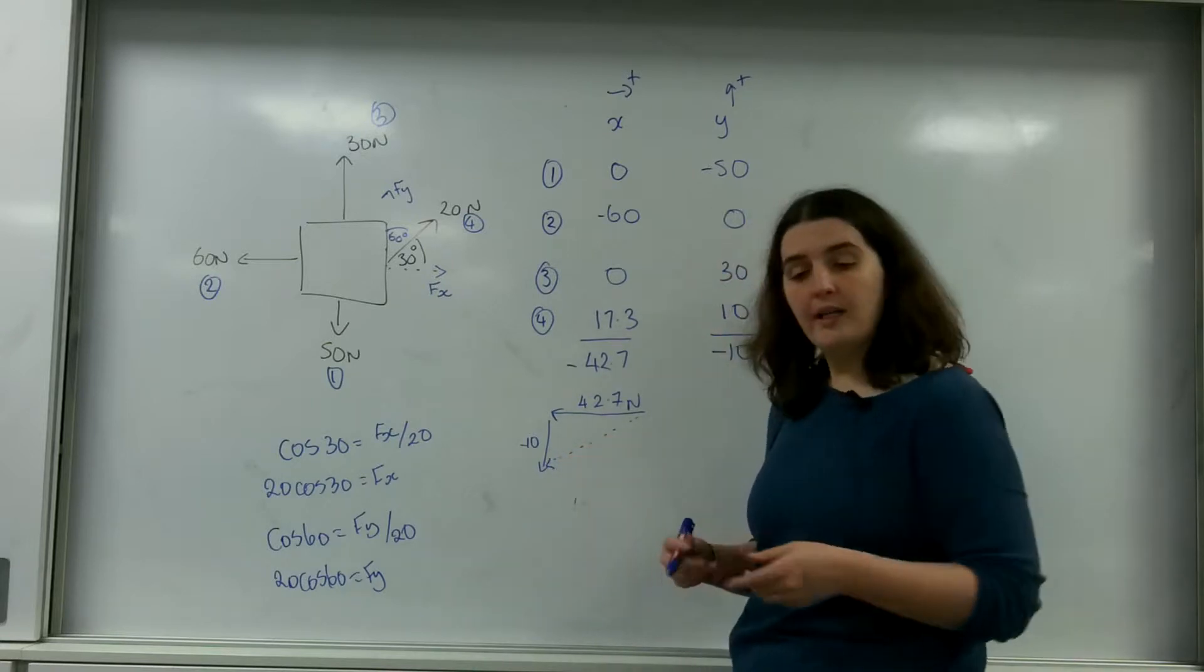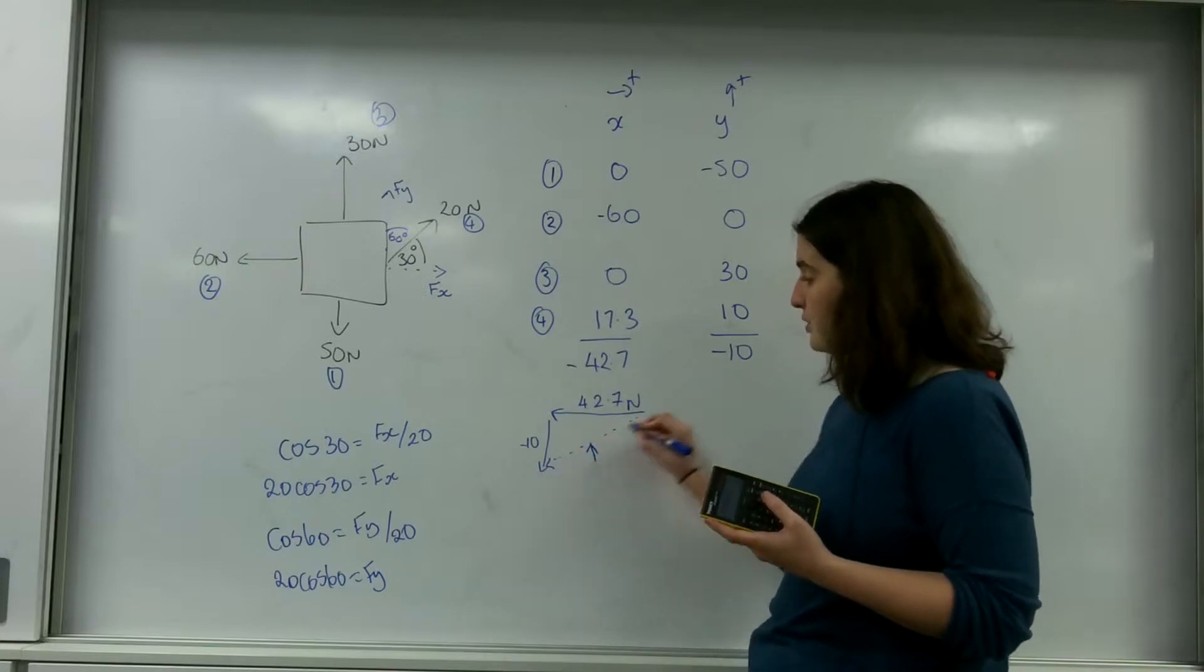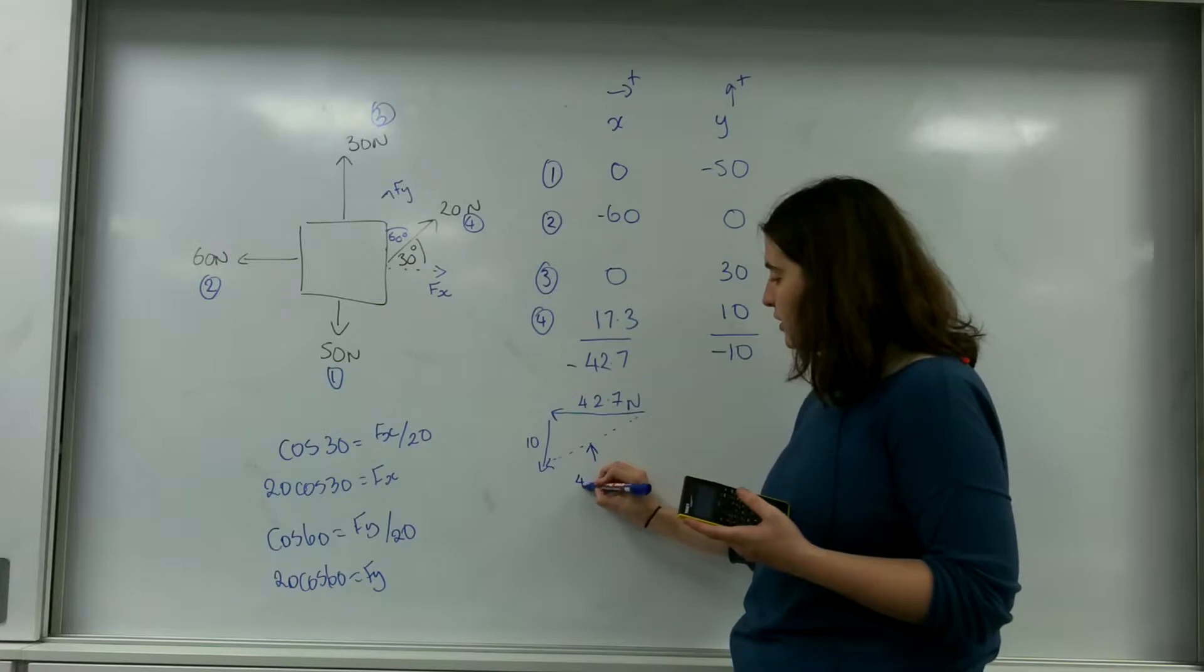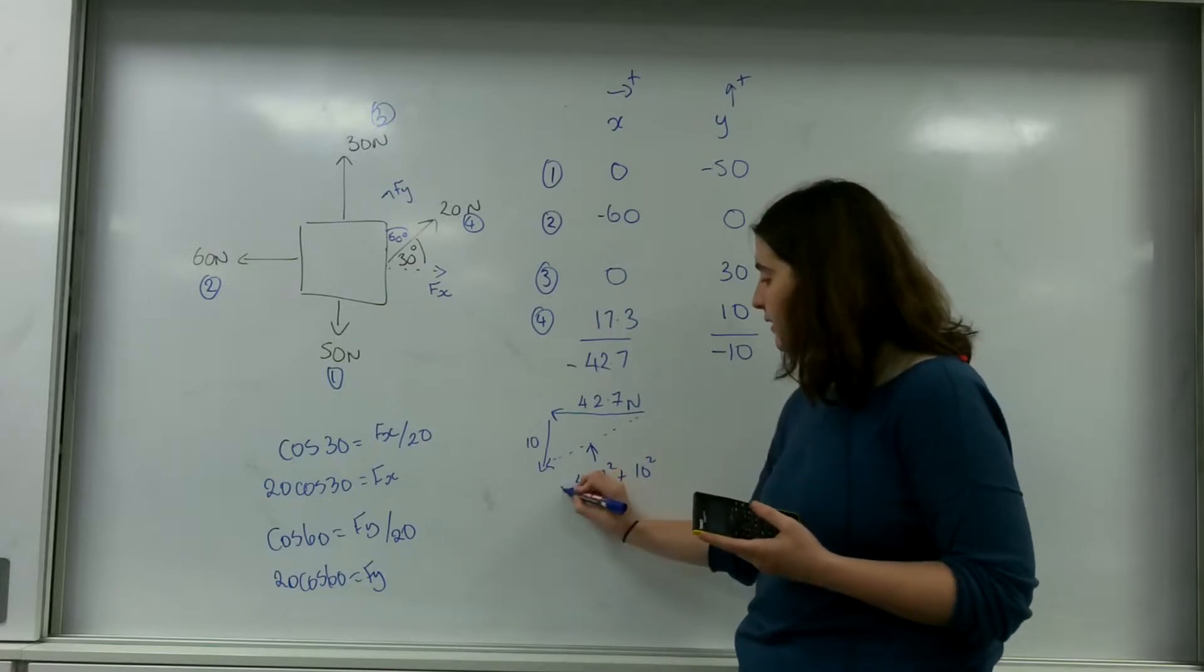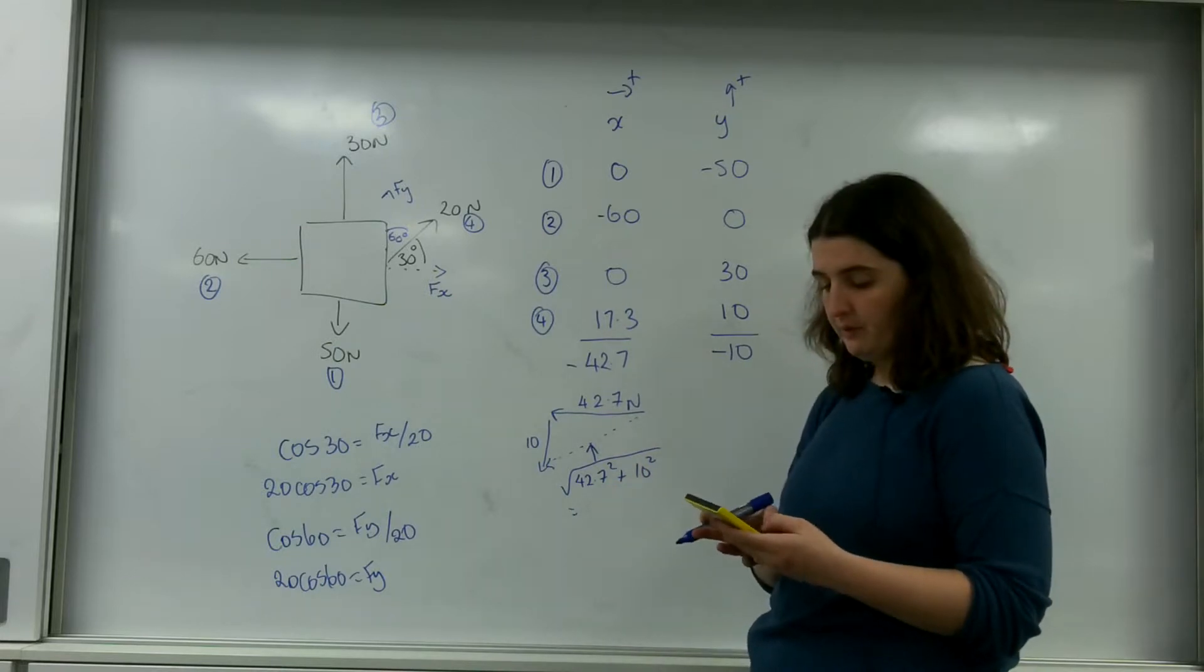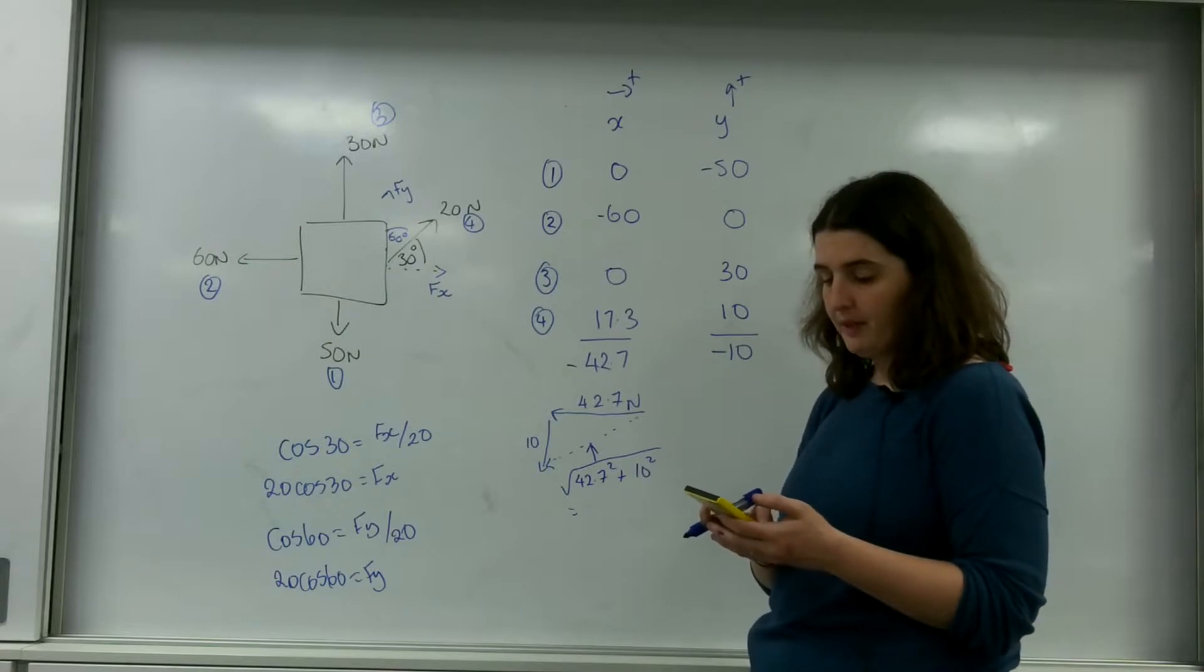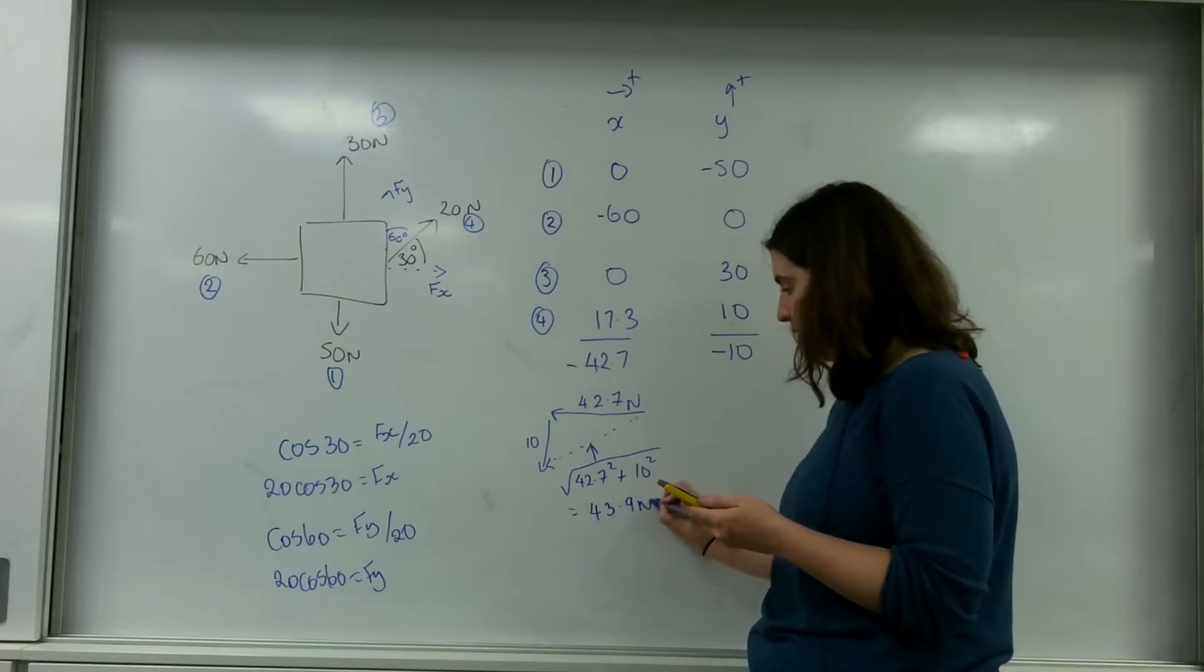To find the resultant you use Pythagoras. So this here is the resultant. That is 42.7 squared plus 10 squared all square rooted. So 42.7 squared plus 10 squared square root of that is 43.9 newtons.